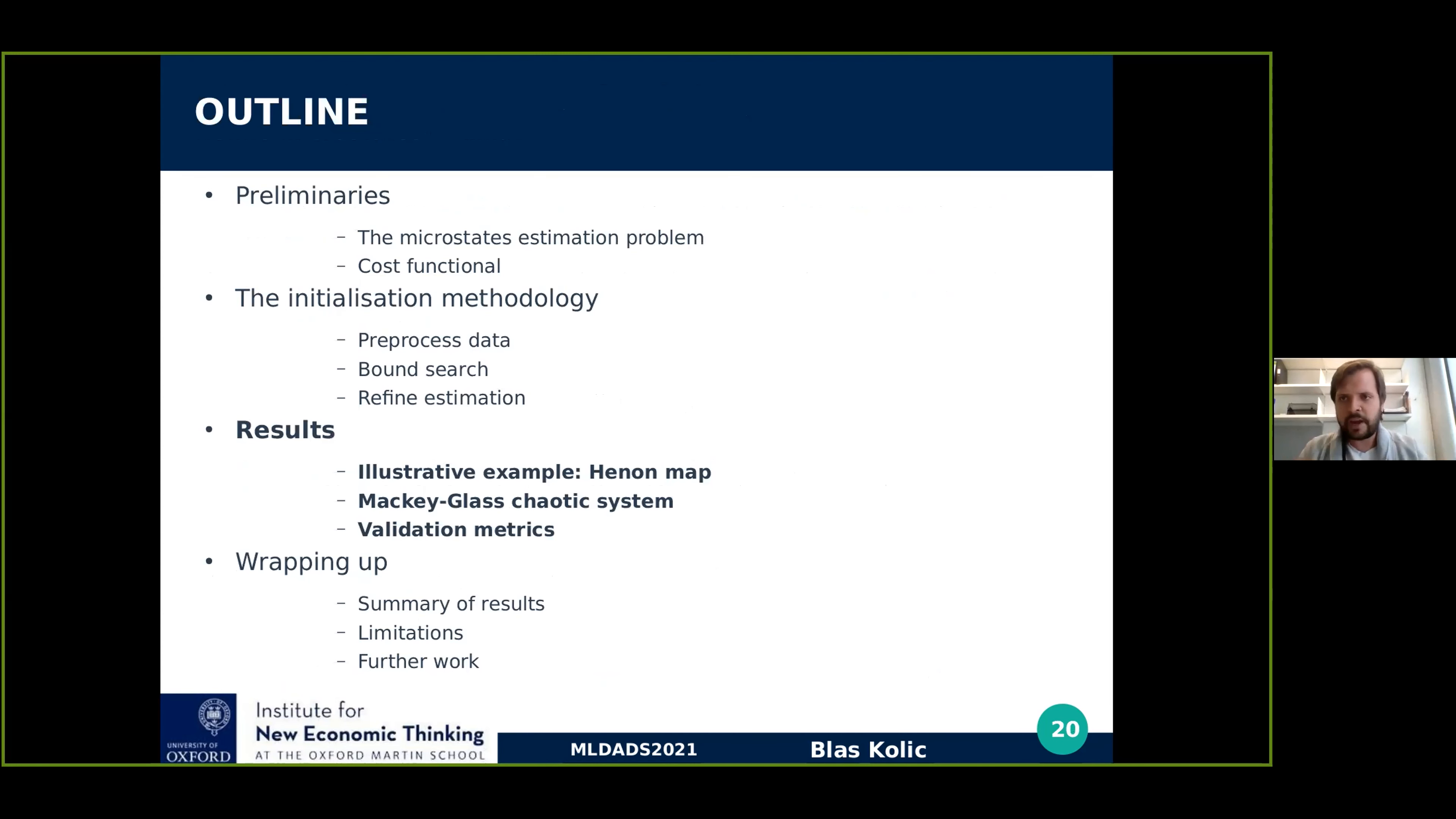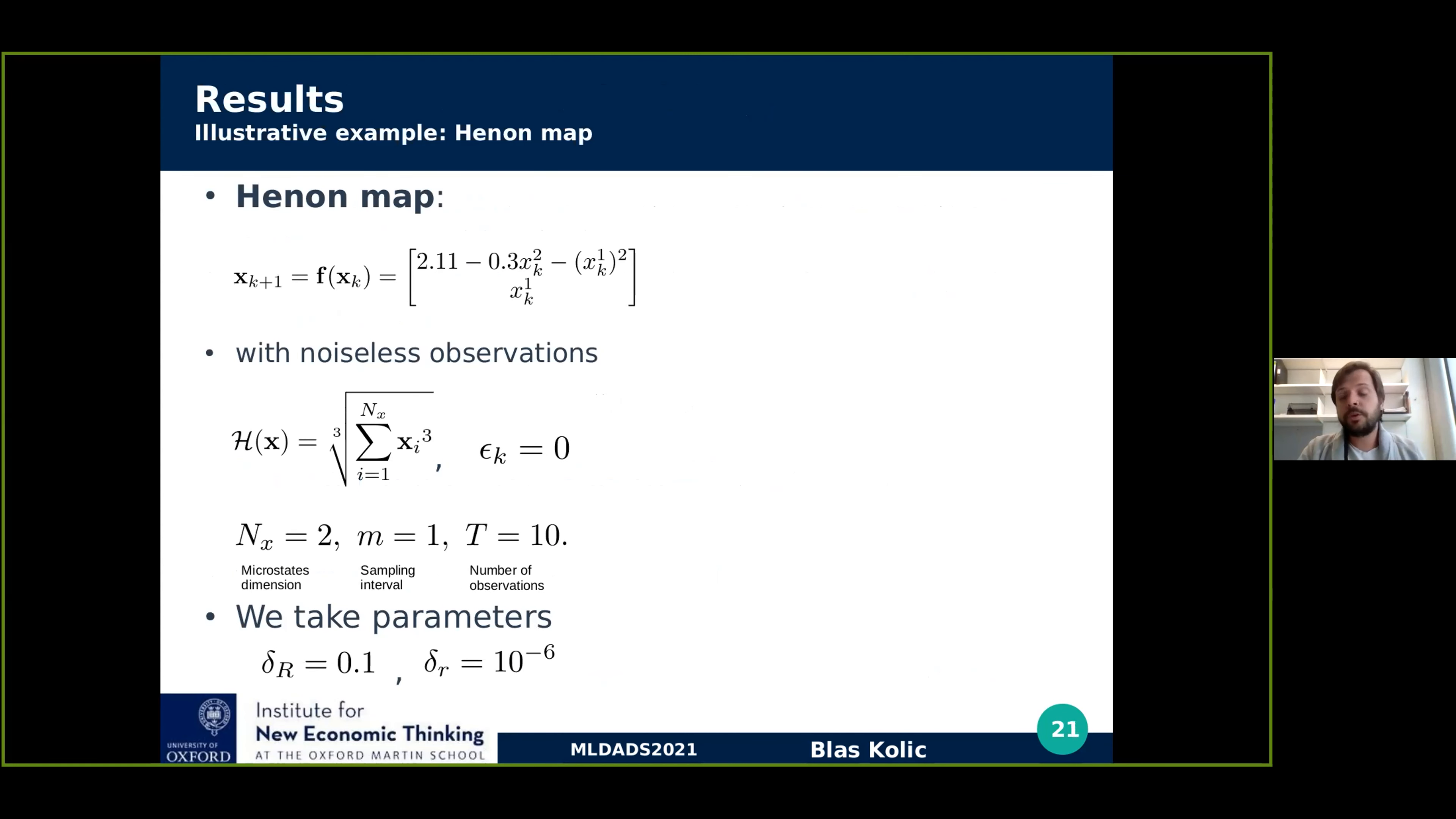With this procedure, we're going to illustrate what happens and give some interesting results that we find. Just to show you geometrically what's going on, we're going to start with the Henon map, which is just a two-dimensional chaotic map described by these nonlinear equations. For the sake of clarity, we're going to take noiseless observations, so epsilon is going to be zero. We're going to take this nonlinear observation operator that goes from R2 to the real numbers. It's like an L3 norm, but without the absolute value. So the microstates dimension is two. The sampling interval is one. We're going to sample observations at every update of the microstates, and we're going to consider a time series of 10 observations.